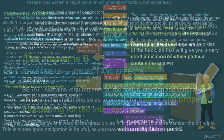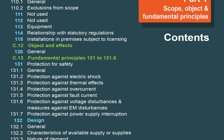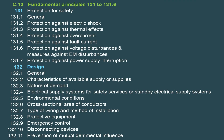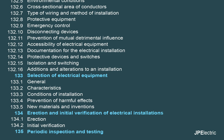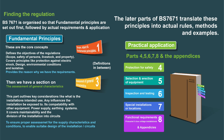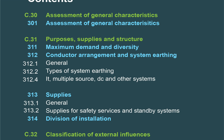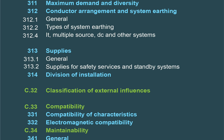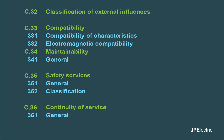BS 7671 is organised so that fundamental principles are set out first, followed by actual requirements and application. In part one — scope, objects and fundamental principles — these are the core concepts. It defines the objectives of the regulations: safety of persons and such, mentioning principles like protection against electric shock, design, environmental conditions and isolation, but it gives an overview only and doesn't go into detail. Then we have definitions, which is a descriptive list of the terms used in BS 7671. Then part three — assessment of the general characteristics — outlines key considerations like the installation's intended use, influences the installation might be exposed to, compatibility with other equipment and services, power supplies, earthing systems, and the division of the installation into circuits.